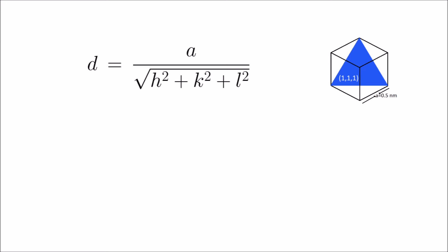then d becomes 0.5 divided by the square root of 1 plus 1 plus 1, that is 0.5 divided by the square root of 3.